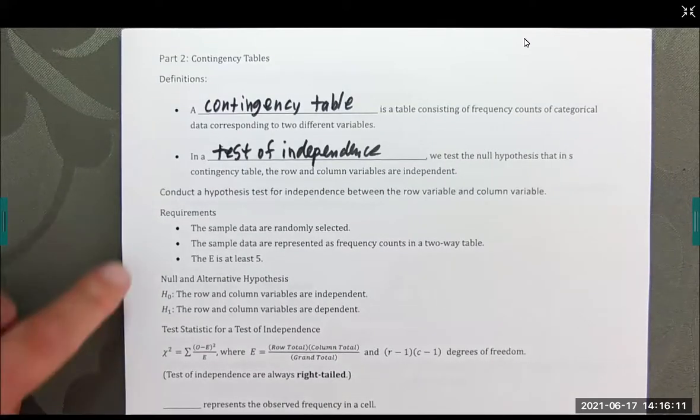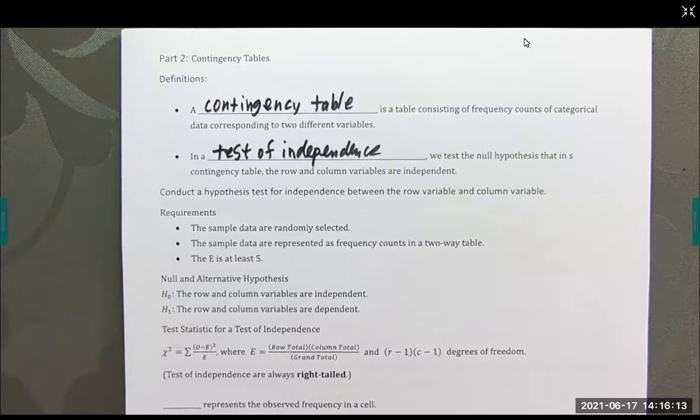Requirements are that the sample data are randomly selected, the sample data are represented as frequency counts in a two-way table, and E is at least five. Our null hypothesis is that the row and table variables are independent. And the alternative is that they are dependent on one another.